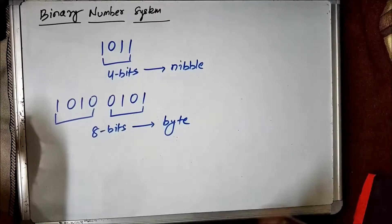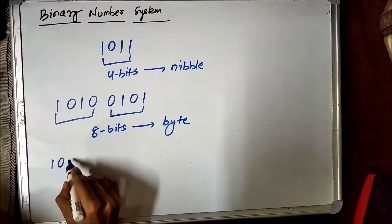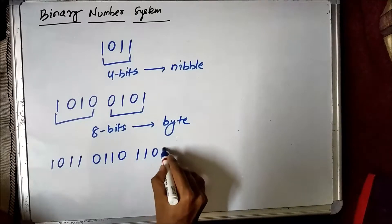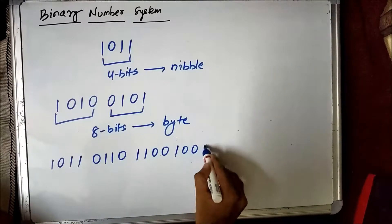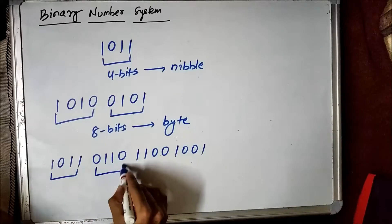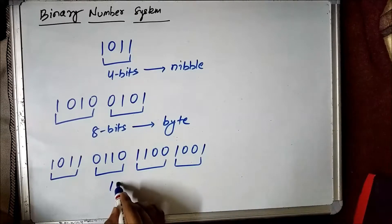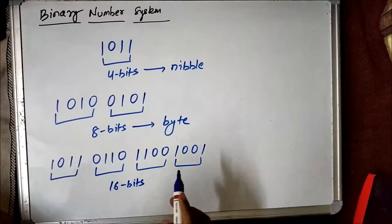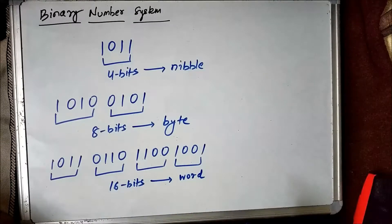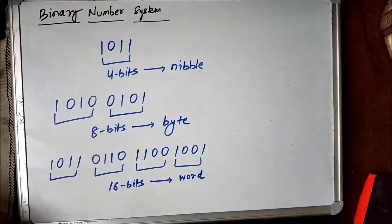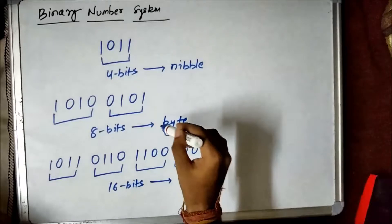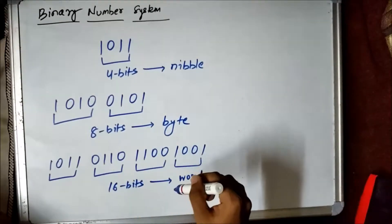Suppose we write a random 16-bit binary number — 1, 0, 1, 1, 0, 1, 0, 1, 1, 0, 0, 1, 0, 1 — a total of 16 bits arranged as four groups of 4 bits each. This group of 16 bits is called a word. So, group of 4 bits is a nibble, group of 8 bits is a byte, and group of 16 bits is a word. These are basic concepts associated with the binary number system.